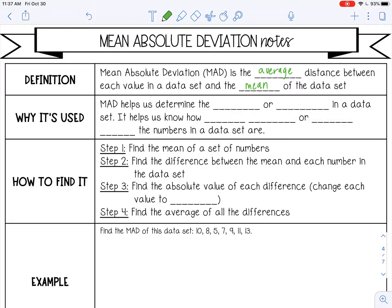MAD helps us determine the spread or variability in a data set. It helps us to know how close together or how spread out the numbers in a data set are.